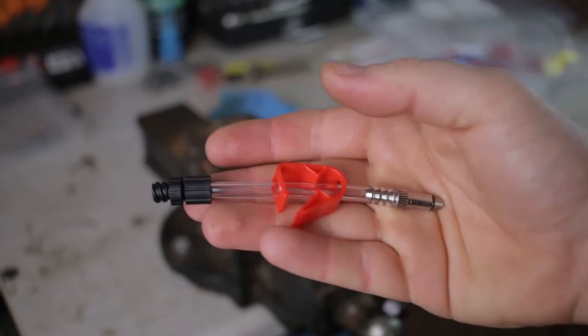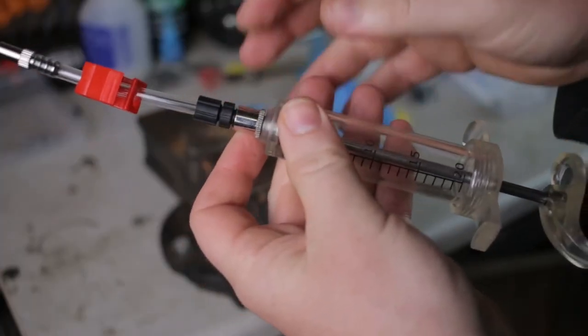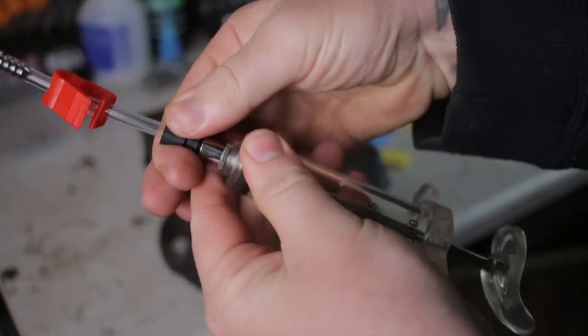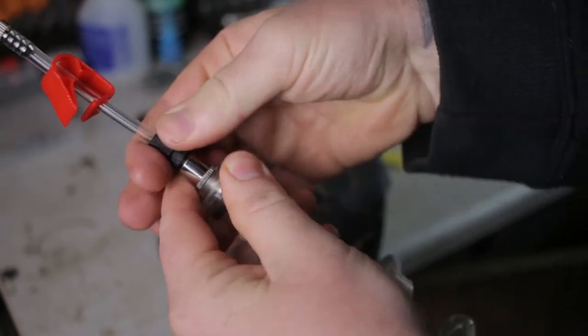So now we can just attach the hose straight to the syringe. And that is so easy because the syringe hose just screws straight into the silver part of the syringe. And there we go.